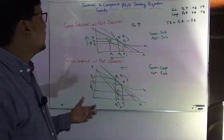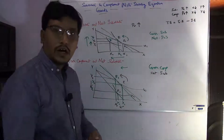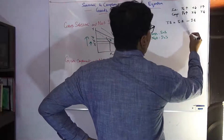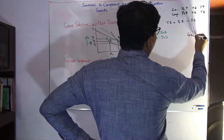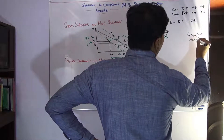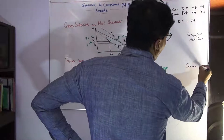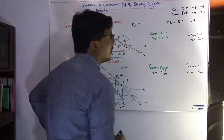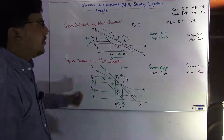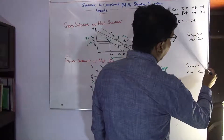A question may arise: what about the other two cases? Let's suppose gross substitute and net substitute — that's already covered. What about gross substitute and net complement? And what about gross complement and net complement? I will give you these as an assignment. Please try to prove whether these cases are practical or not. I will tell you the answer before your assignment: these two cases are practically not possible.